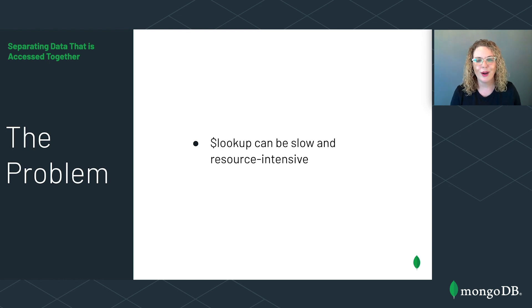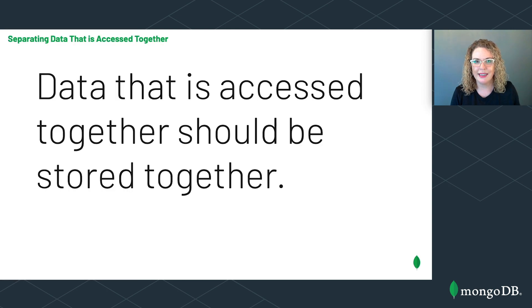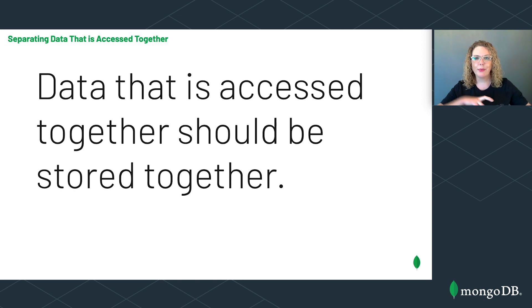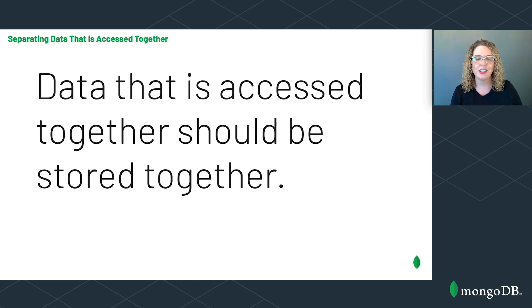I've said it before and I'm going to say it again: the rule of thumb when modeling your data in MongoDB is that data that is accessed together should be stored together. Instead of separating data that is frequently used together between multiple collections, leverage embedding and arrays to keep the data together in a single collection.